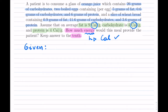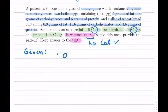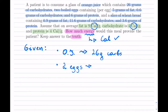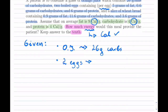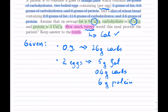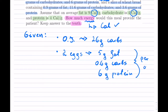Next, our given pieces of information. We have orange juice — OJ — and that provides 26 grams of carbs. The next item was two eggs. This is per one egg, so we have to be careful: 5 grams of fat, 0.6 grams of carbs, and 6 grams of protein — per one egg.